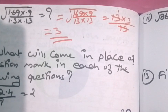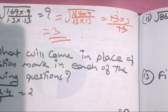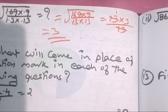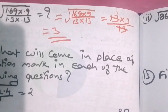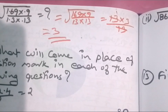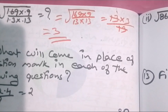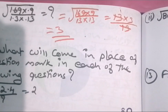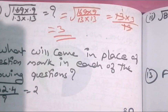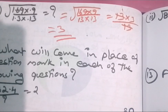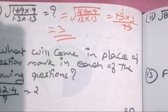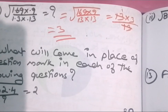What will come in place of question mark in each of the following questions? 32.4 divided by x is equal to 2.